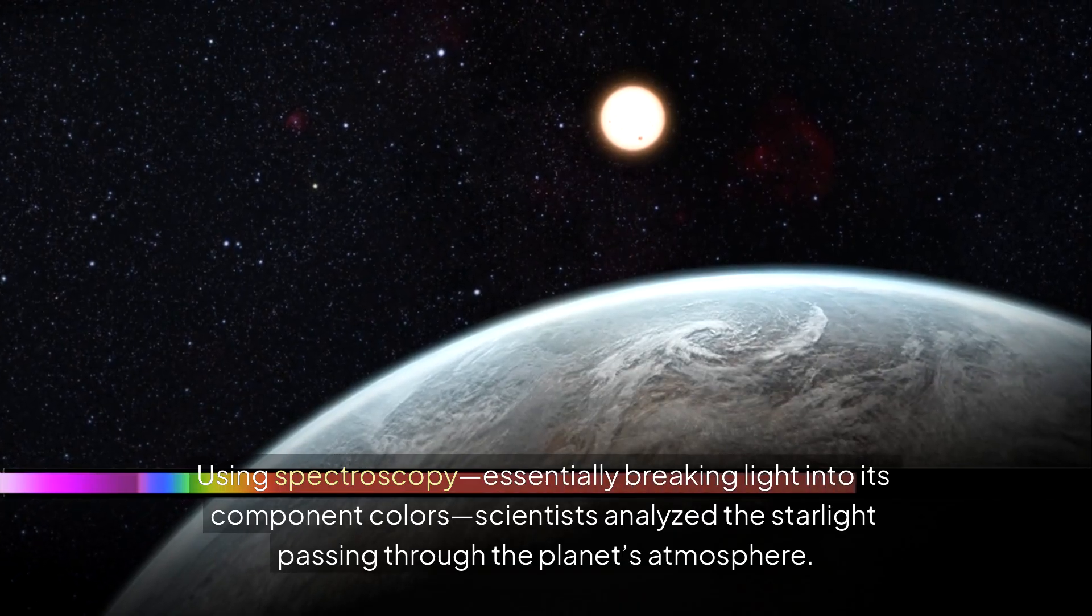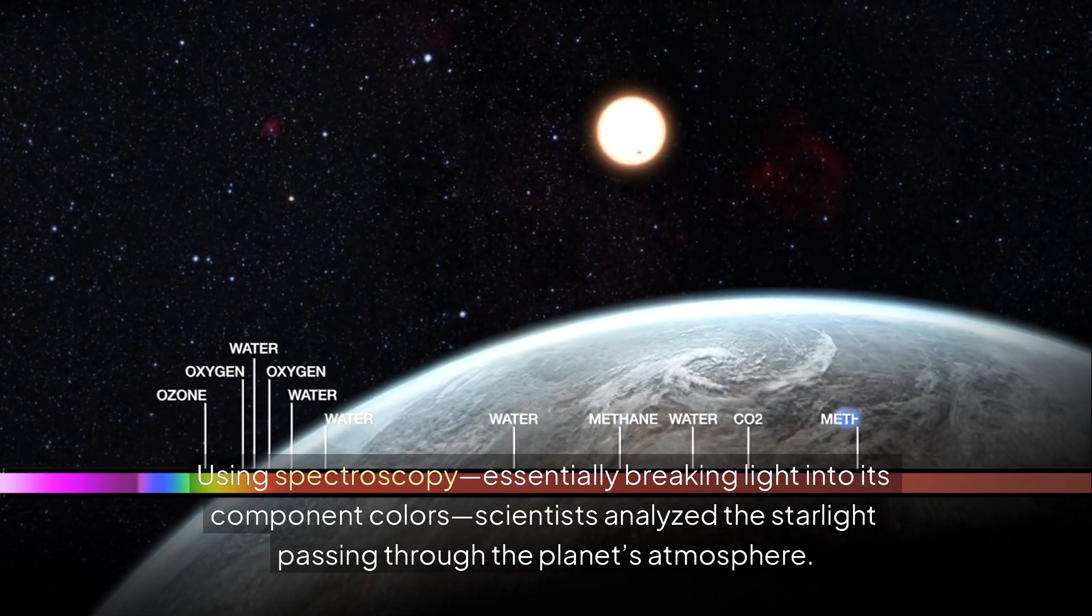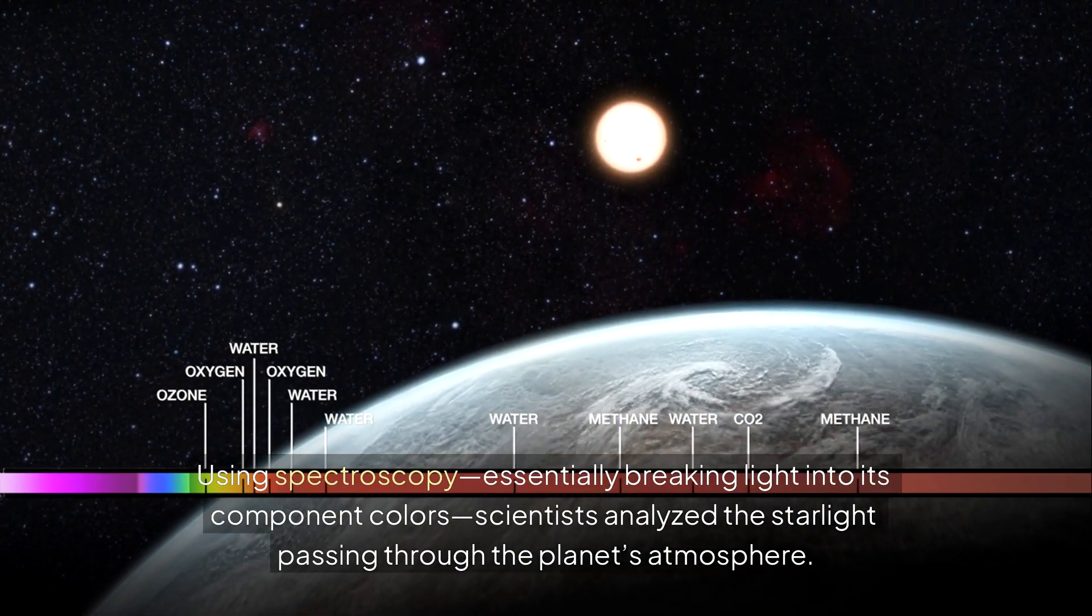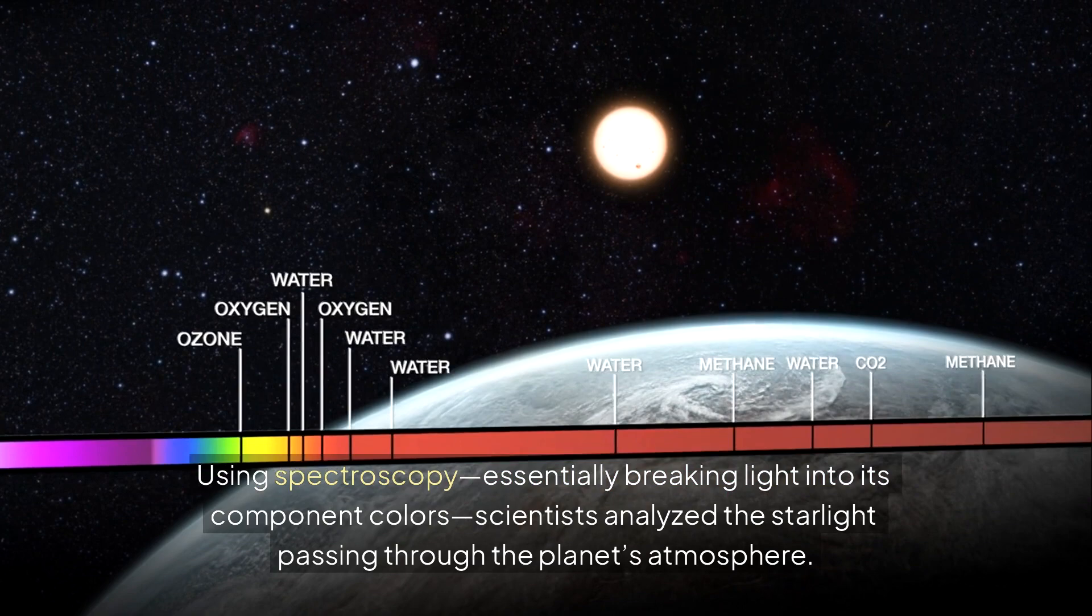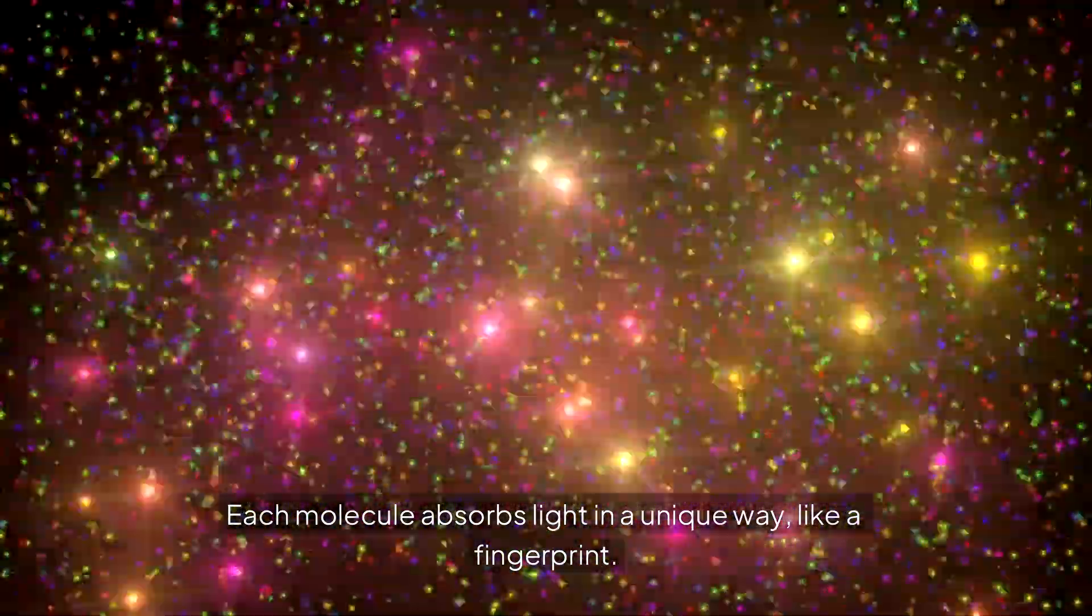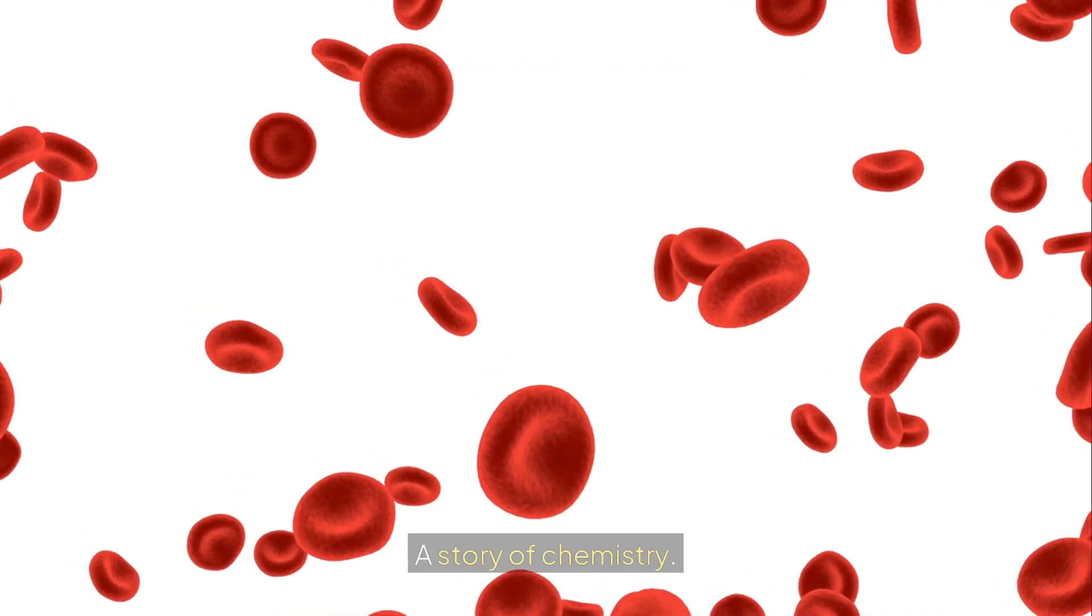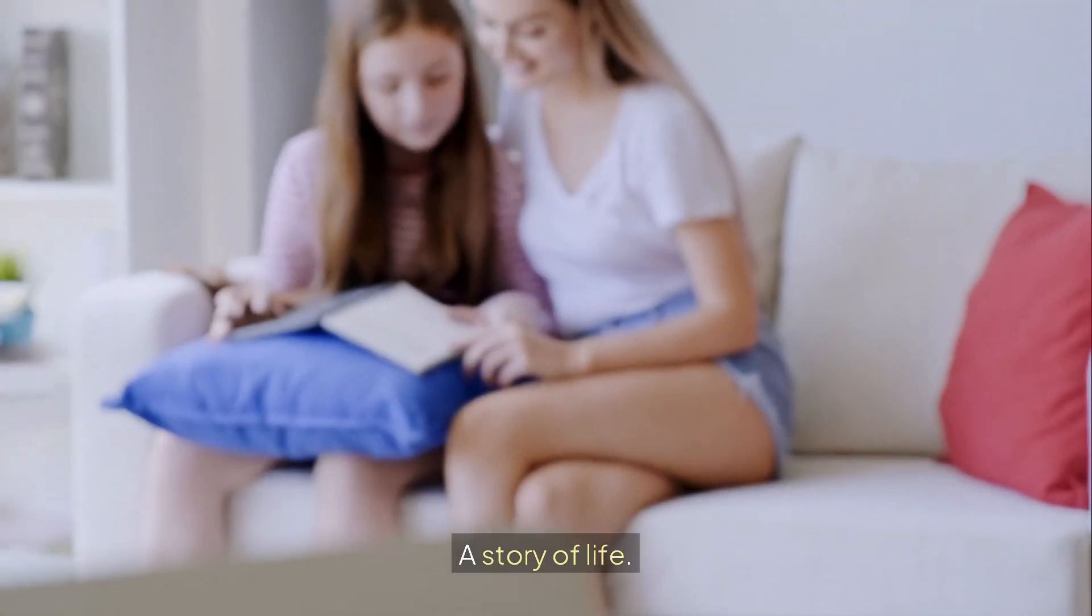Using spectroscopy, essentially breaking light into its component colors, scientists analyzed the starlight passing through the planet's atmosphere. Each molecule absorbs light in a unique way, like a fingerprint. And in K-218b's light, those fingerprints revealed a possible story. A story of chemistry. A story of life.